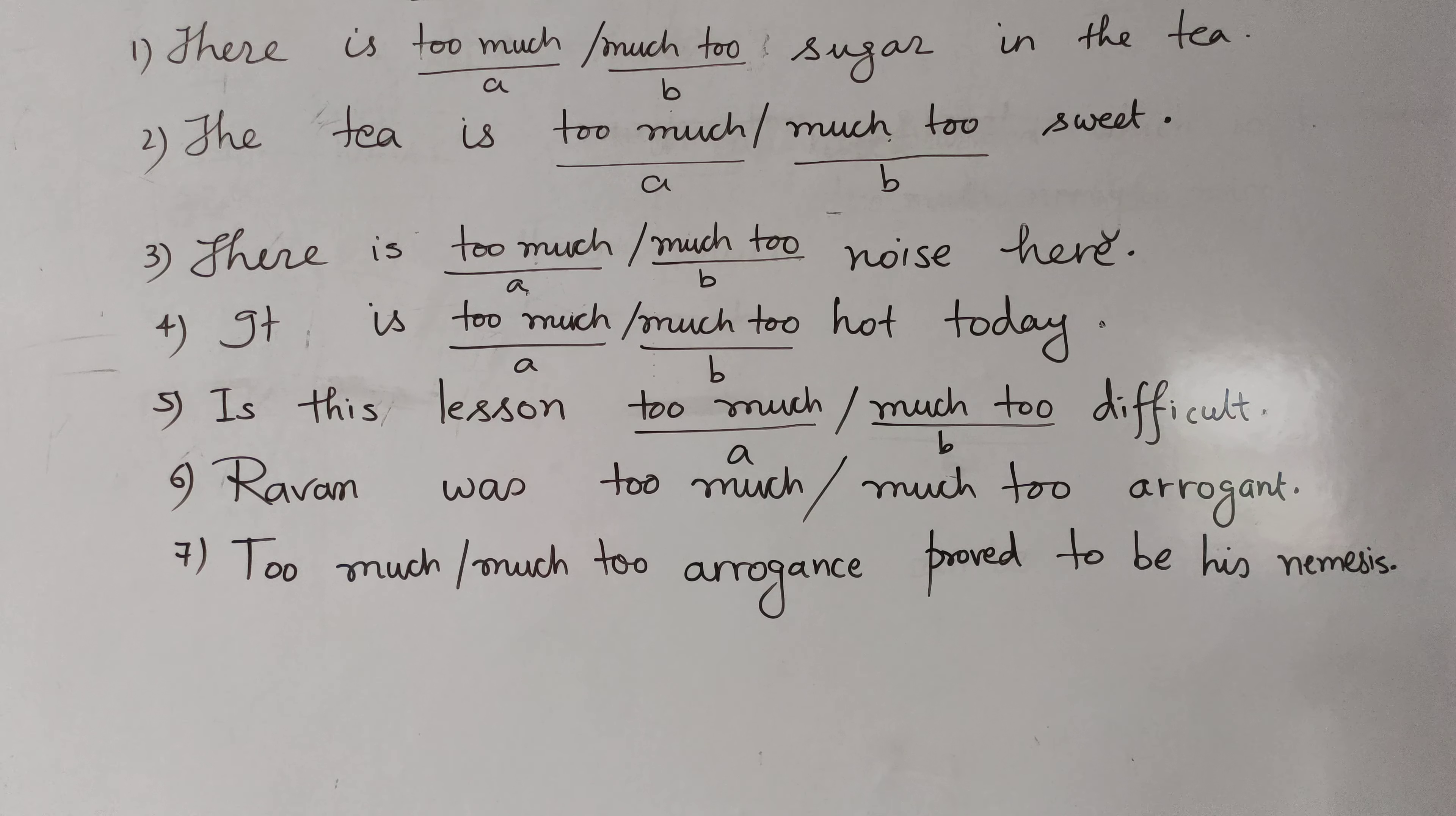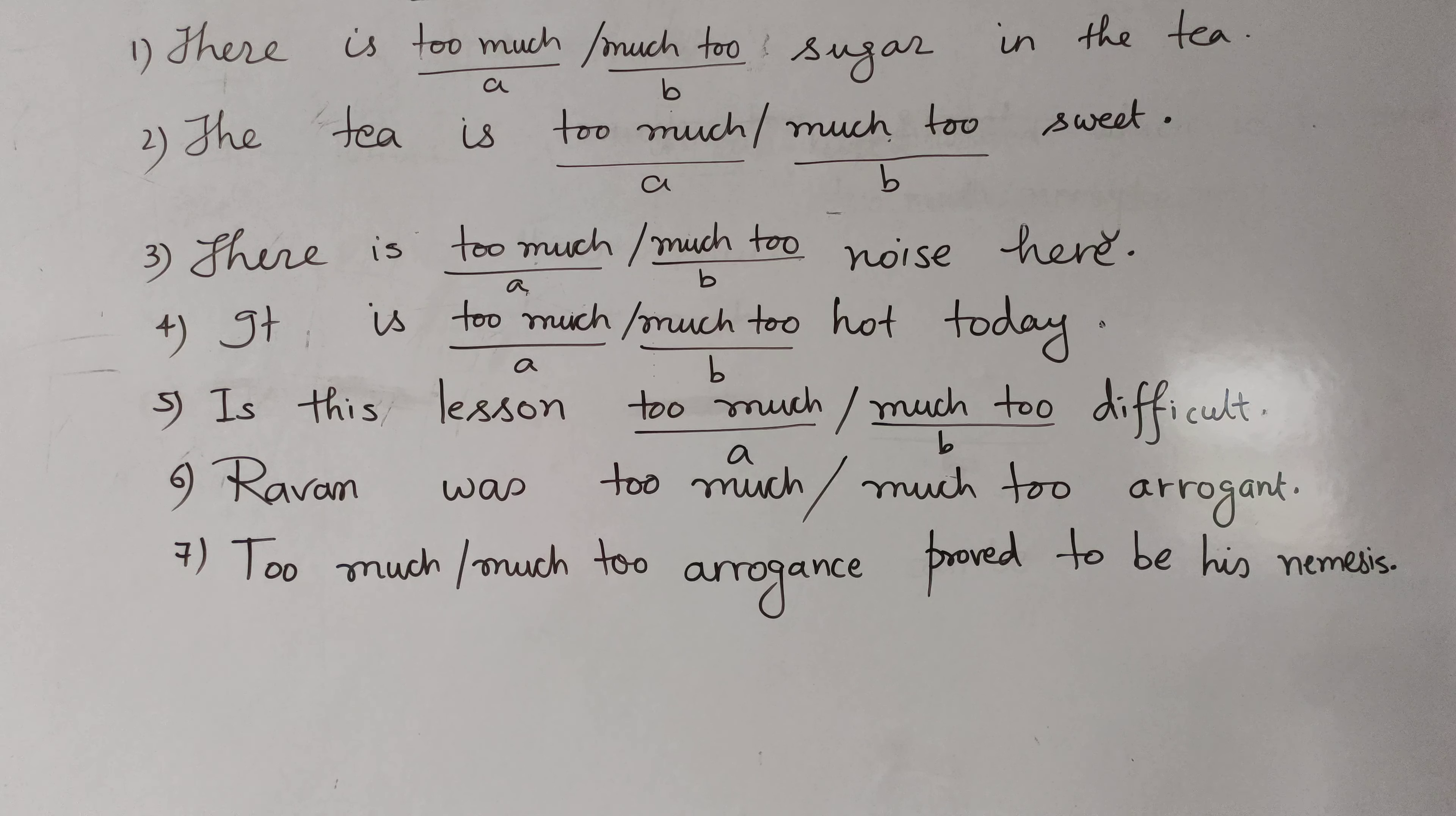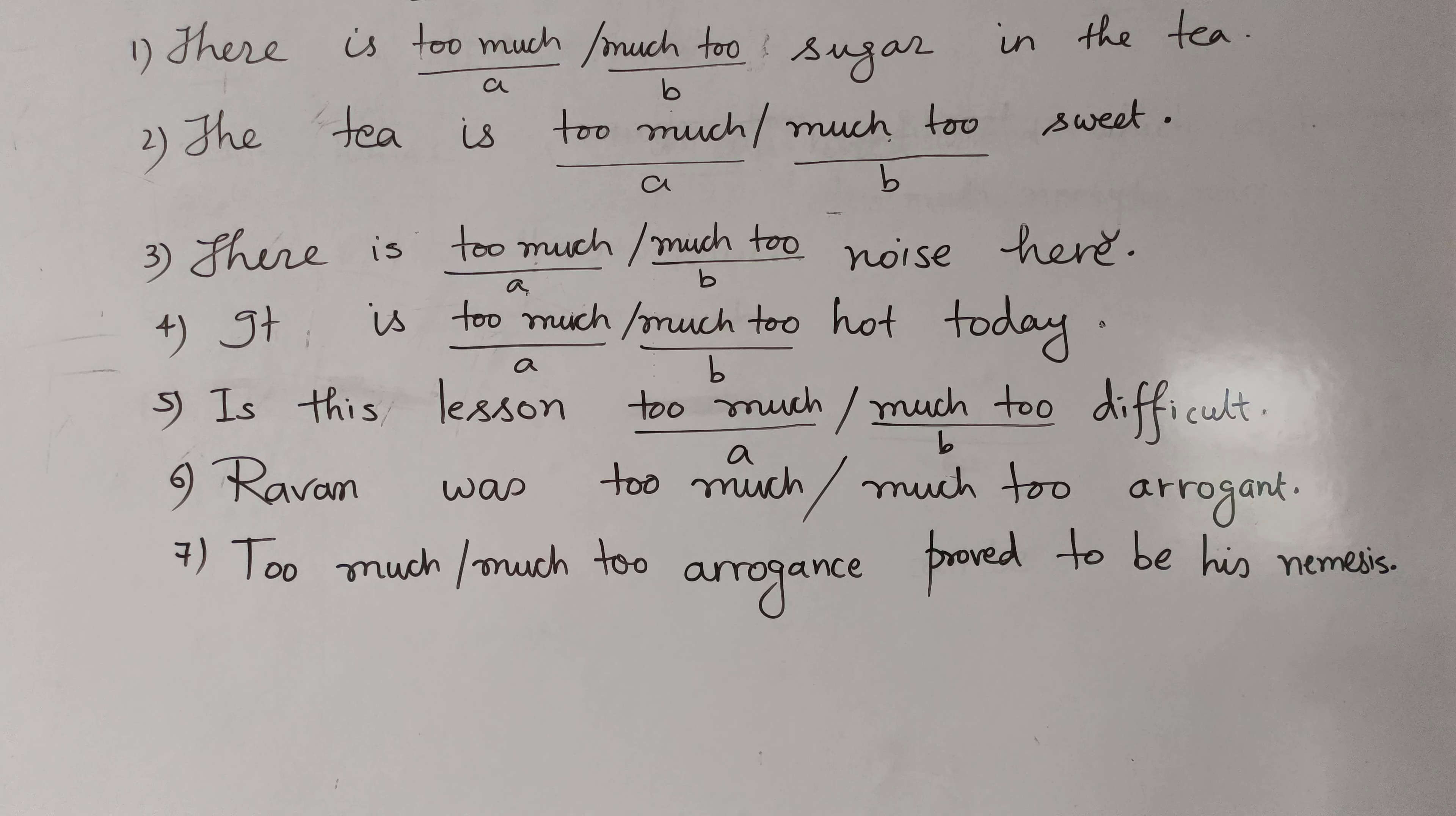Wherever you have used too much, look carefully at the word that comes after. Too much sugar. Too much noise. Too much arrogance. What are these? Sugar, noise, arrogance. All three are what? Nouns. So the rule is very simple. When you have to use it before a noun, you will use too much. Now look at,